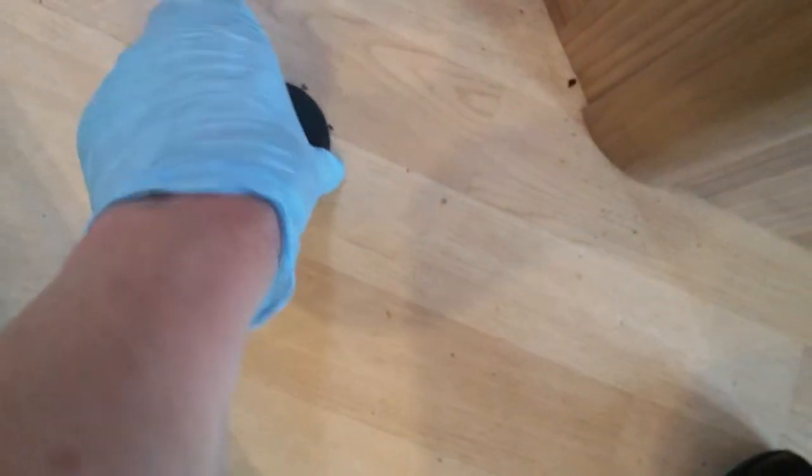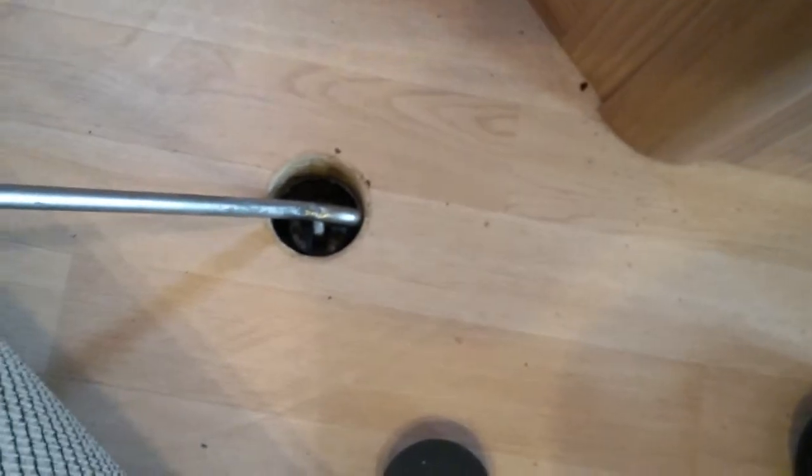To lower the spare wheel, you'll see that there's this grommet in the floor just here. Just remove it, and then just pop the spare wheel winding handle into place. And then just wind it down.